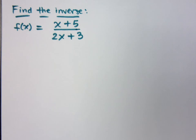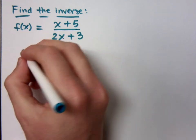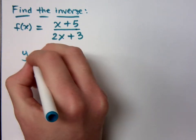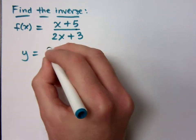Here's an example of finding an inverse where you're not just going to reverse engineer it just by looking at it. This is one of those where you actually have to go through and do all the grunt work. The first thing would be to rewrite this where f(x) is y.